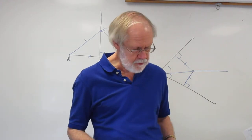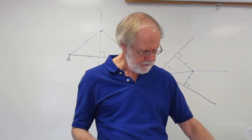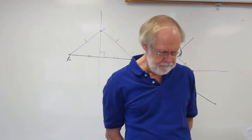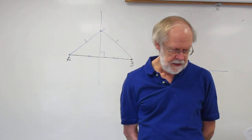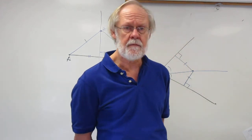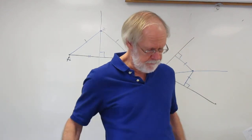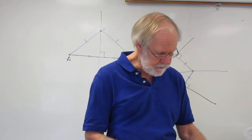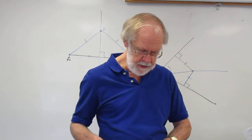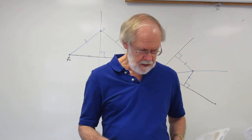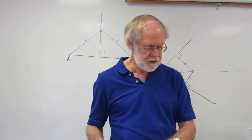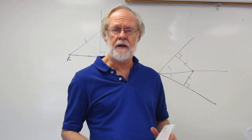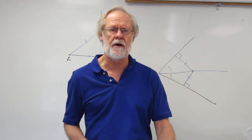You have some problems to do — mostly problems where you have to determine if a point is on a bisector, or if a line is a bisector based on the given information. Next, we will look at 5.2, and that will be perpendicular bisectors and angle bisectors of a triangle.